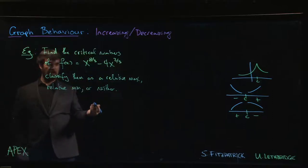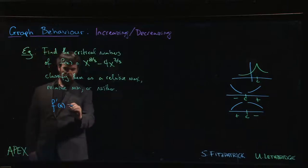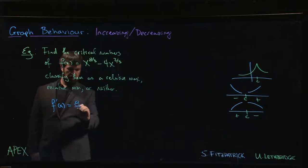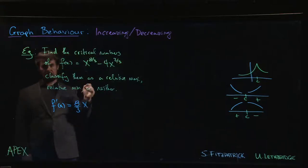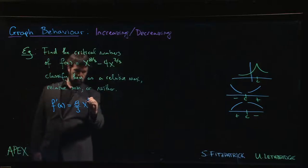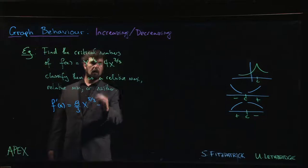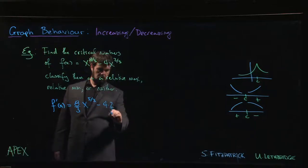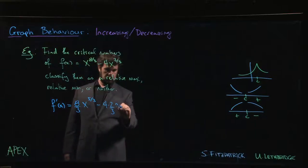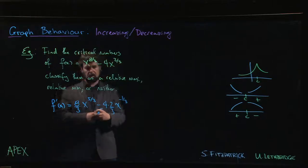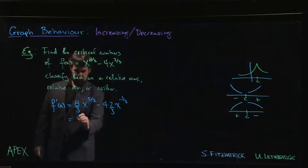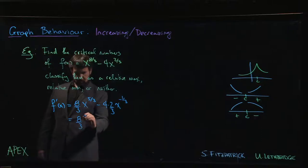If we want critical numbers we need derivatives. This function is defined for all real numbers, so first thing we got to do is compute f prime and see where it's either zero or undefined. We can use power rule: 8 over 3 comes down, x to the 5 thirds (subtracting 1 from 8 thirds - that's 8/3 minus 3/3 which leaves us with 5/3), minus 4 times 2/3, where 2/3 comes down and we subtract 1, so 2/3 minus 3/3 leaves us with negative 1/3.